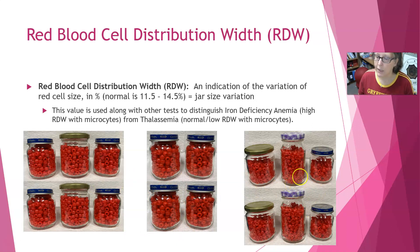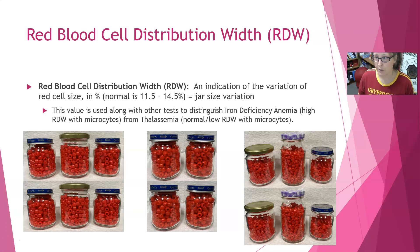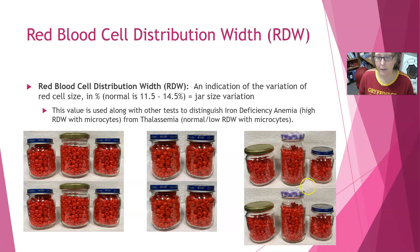A very high RDW can represent more severe problems in red cell morphology where you have all kinds of variations in shape and size. For example, sickle cell crisis produces a really high RDW because you have all kinds of weird shapes and sizes of red cells. That's my concept of jars and beads and red cell indices — I hope you enjoyed that and I'll see you in the next video.